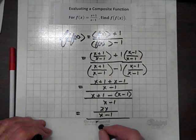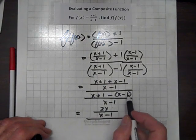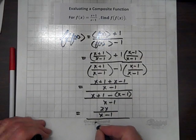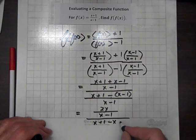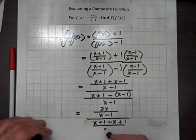Downstairs, we'll distribute this negative. And so we get x plus 1 minus x, and a minus times a minus is a plus 1, and the denominator is x minus 1.